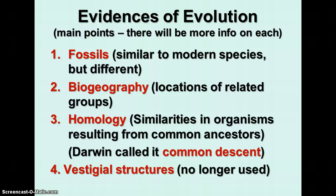This is the second set of notes on unit 10, evolution and taxonomy. This one is about evidences of evolution. There are four main kinds of evidences of evolution and we're going to elaborate on each one.